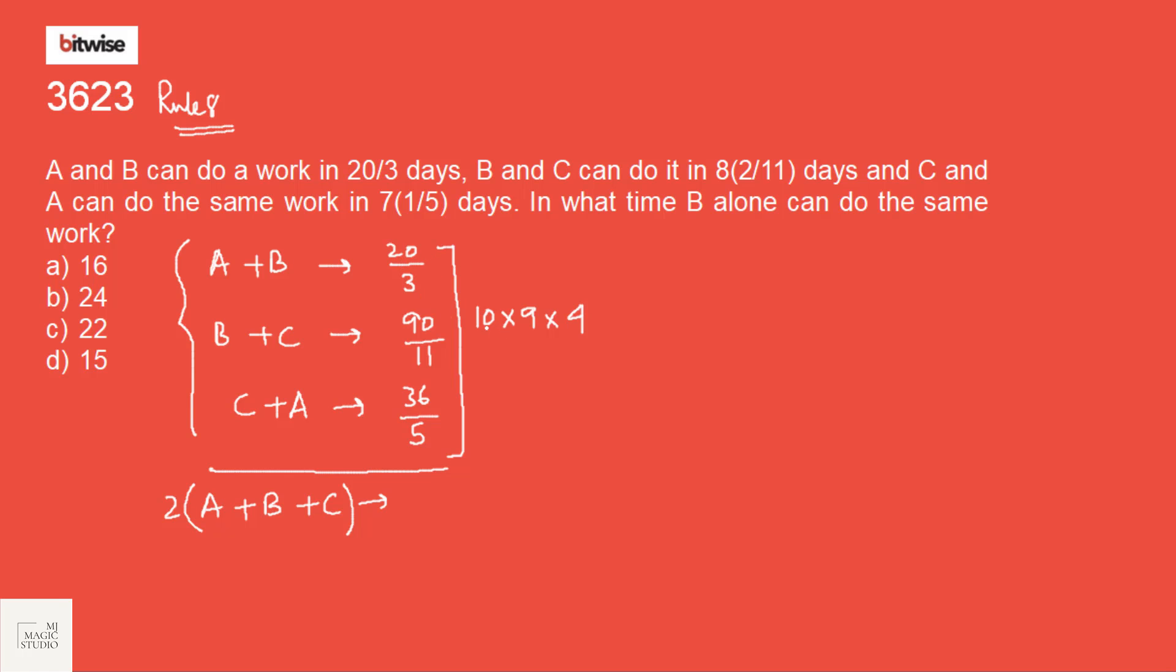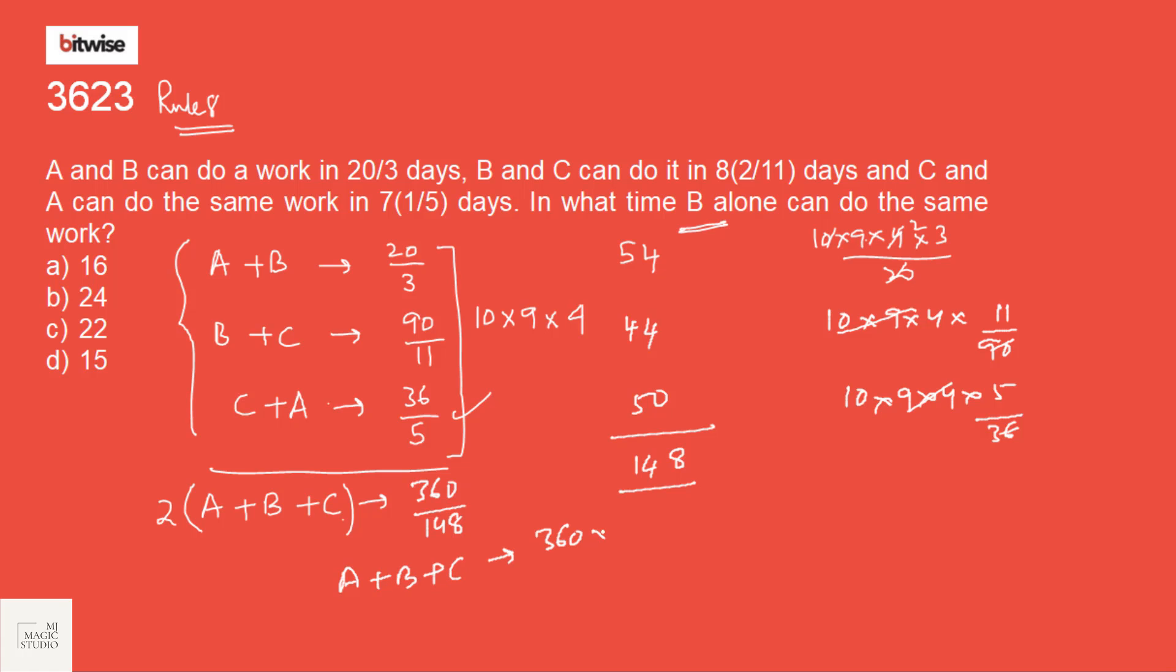So divided by 20 by 3, 20 gone 18. So what we are actually doing is 10 into 9 into 4. This is divided by 20 by 3. That would be 3 by 20. So this will give 9 into 6, 54. So the next would be 10 into 9 into 4 divided by 90 by 11. That would be 44. Then 10, 9, 4 divided by 36 by 5. That is 50. So this gives me 148. So twice A plus B plus C will take 360 by 148 days to complete. A plus B plus C will take 360 into 2 by 148. That is 180 by 37 days to complete the work.